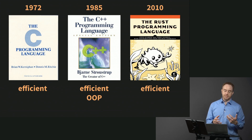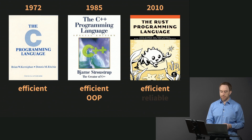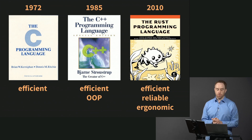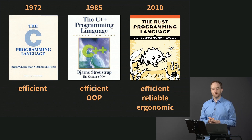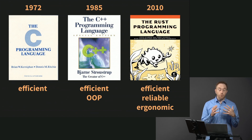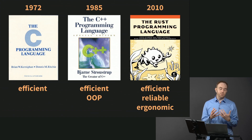Rather than going in the object-oriented direction like C++ did — because Rust is not an object-oriented language — Rust said: we just want to be reliable, efficient, and ergonomic. Compared to both C and C++, not only is Rust a lot more reliable, it's also a lot more ergonomic.